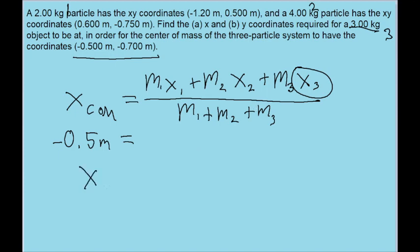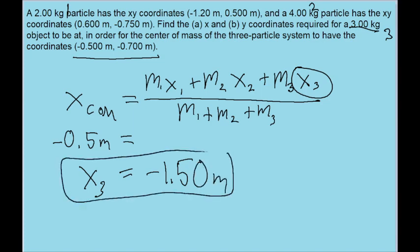And what we find is that the position, the x position, that particle three has to be at is negative 1.50 meters. So that's the x position of the particle. That's where we'll have to place the particle to get this center of mass.